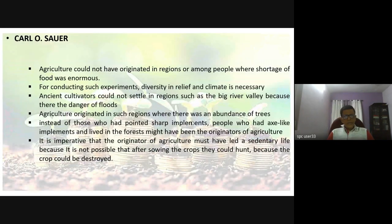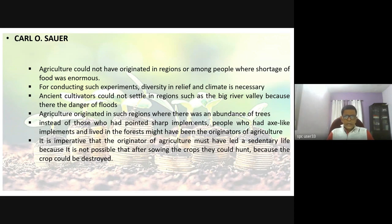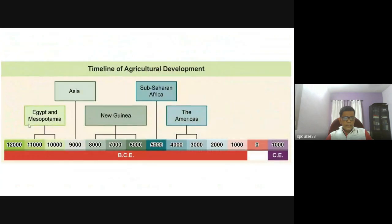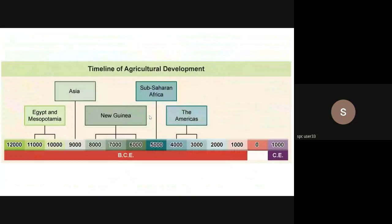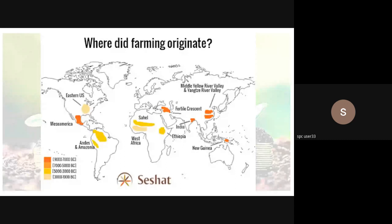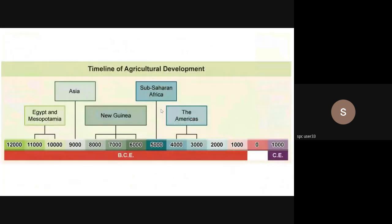Karl Sauer is an agricultural scientist who made some very interesting claims. He says that while it is believed agriculture came up in Mesopotamia — and there could be an argument with Egypt as well — it would not have been easy for agriculture to have originated in regions where shortage of food was enormous. These are desert regions, so his argument is that something like farming, which requires innovation, would not have come from people facing difficulties with water availability.